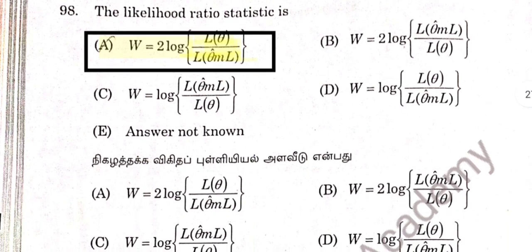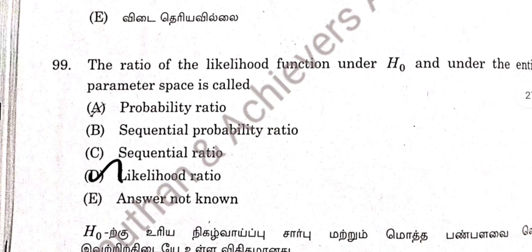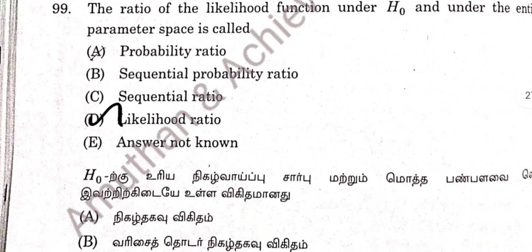Question 98: The likelihood ratio statistic — option E. W equal to 2 log of L of data divided by L theta cap and M1. Option E is correct. The ratio of the likelihood function under the null hypothesis to the full parameter space is called the likelihood ratio.